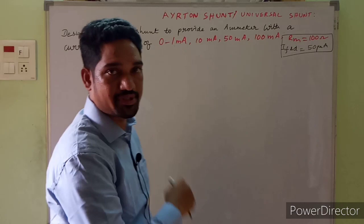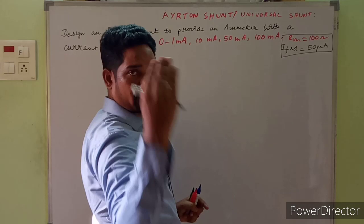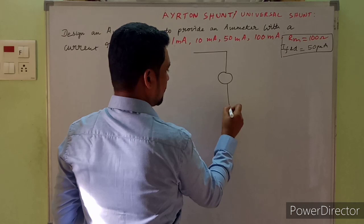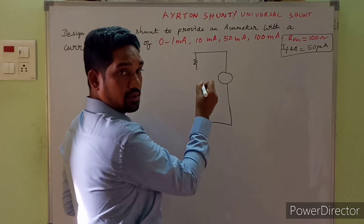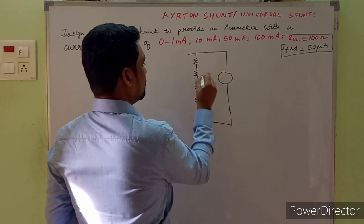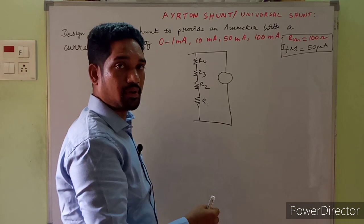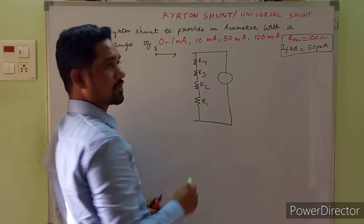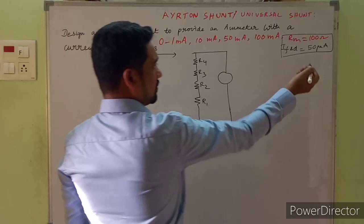We are asked to design a universal Ayrton shunt. For four ranges, we need four resistances in parallel with the basic meter. The basic meter is here, and we need resistances R1, R2, R3, R4 in series. There is a reason for this ordering which I'll explain at the end. We have a switch arrangement for selecting different ranges.